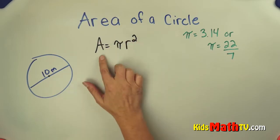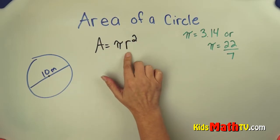The formula for the area of a circle is area equals pi times the radius squared.